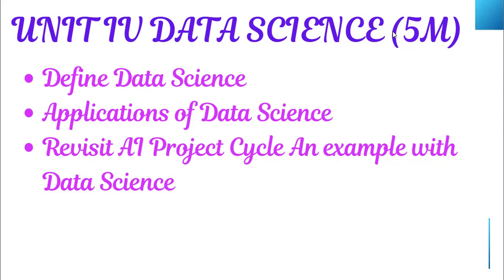One and three marks — three marks are from objective. The concepts you have to concentrate on to get five out of five are only three: define data science, applications of data science, and revisit AI project cycle with a data science example. They never ask questions from the third concept, but I will explain that also since we don't know if they will ask this year.